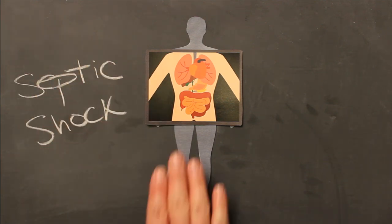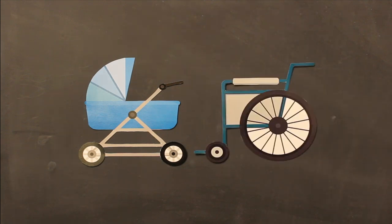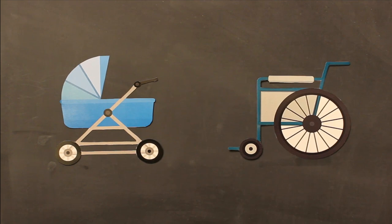While sepsis can strike at any age, here's who's most vulnerable. Babies under a year old, and those 65 and older with chronic illnesses like diabetes. People with weakened immune systems are also at higher risk.